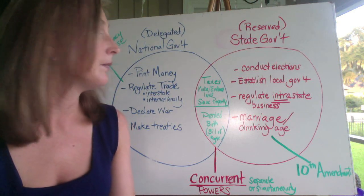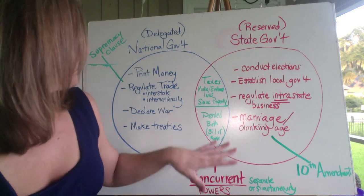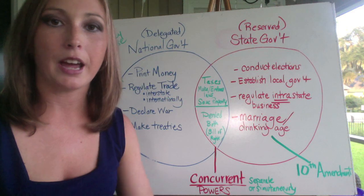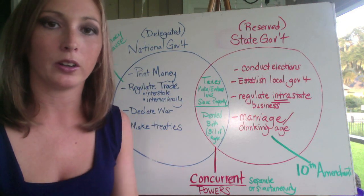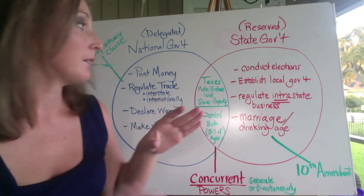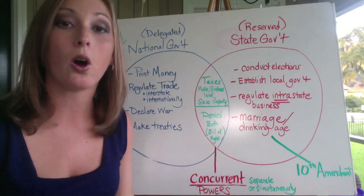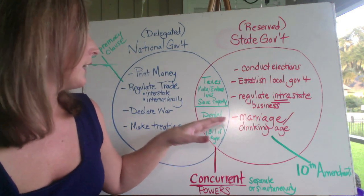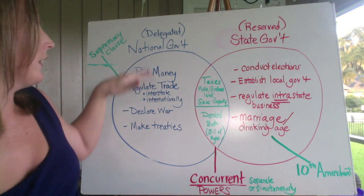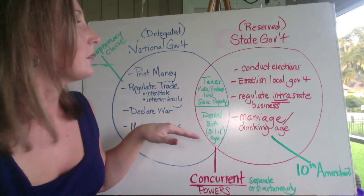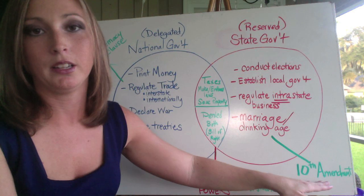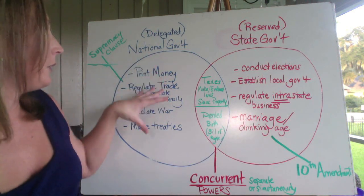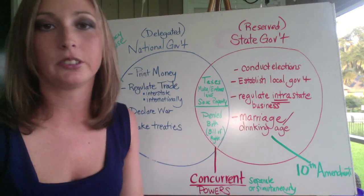There are also denied powers — things neither state nor national government can do. These stem from the Bill of Rights: no government can pass or enforce laws that violate our rights, such as the freedom of speech protected by the First Amendment. The supremacy clause states that the Constitution is the supreme law of the land, meaning states cannot make laws that are delegated to the national government. Finally, the Tenth Amendment says that anything not delegated to the national government is left up to the states.